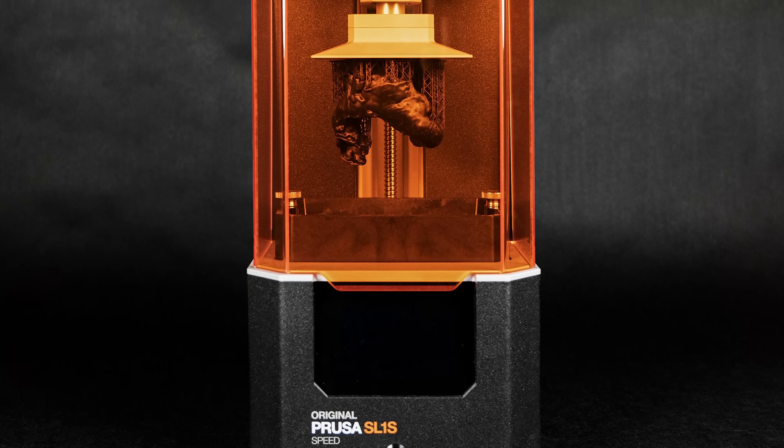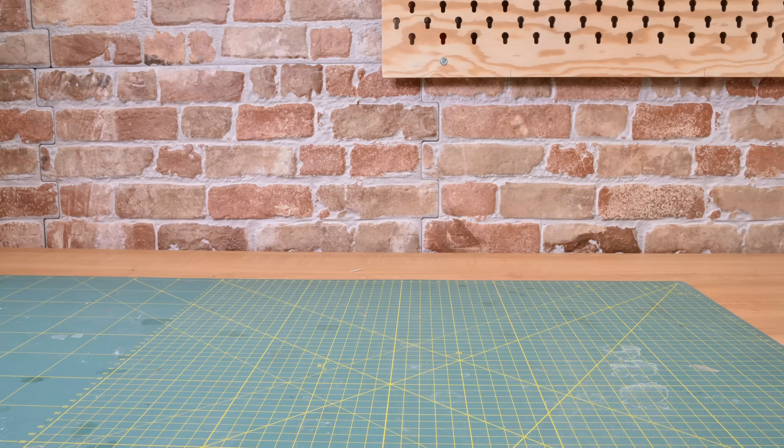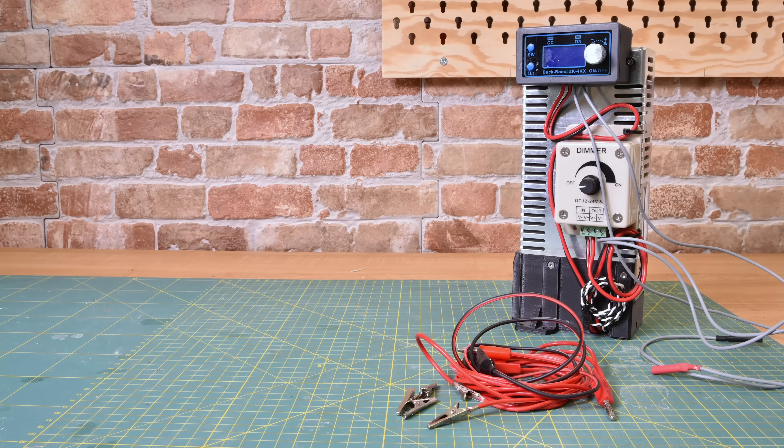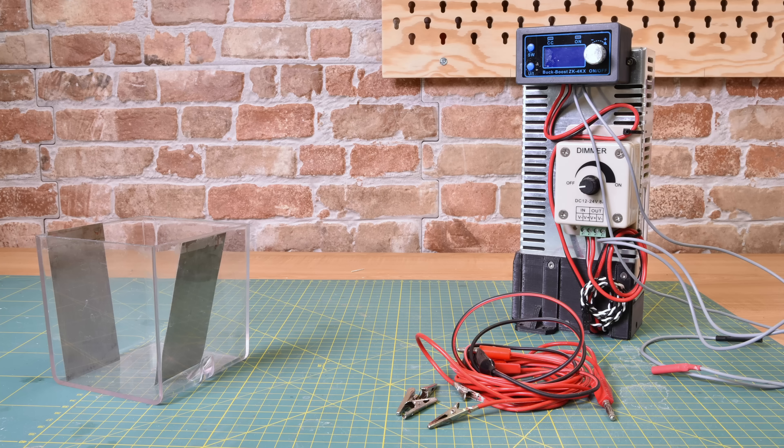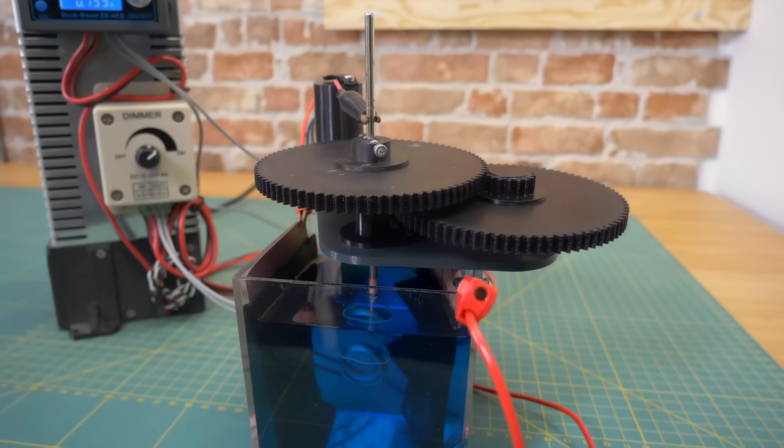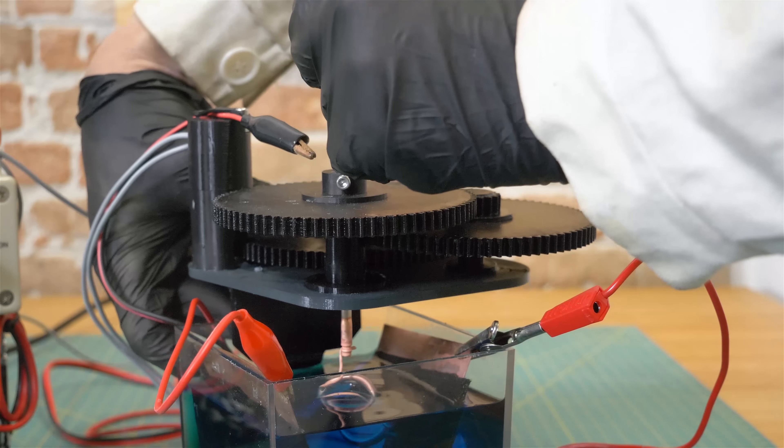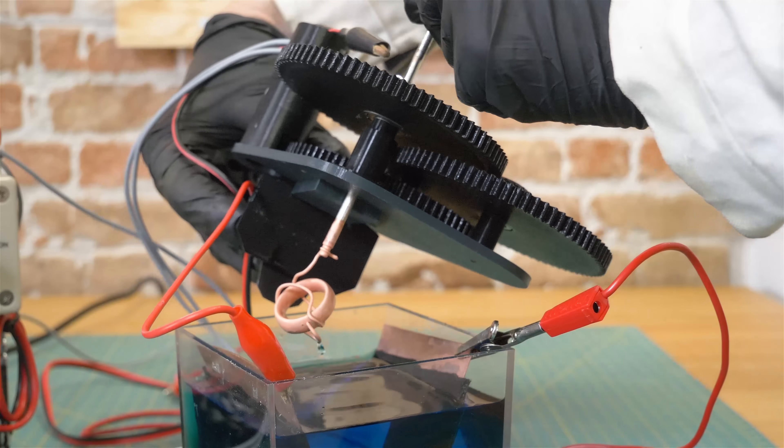You will need a 3D printer, preferably an SLA machine. Then you will need a power supply, wires and clamps, a plastic or glass tank. And we also recommend a rotating device. This one was 3D printed and built from simple electronic components. The link to the model is in the blog article.